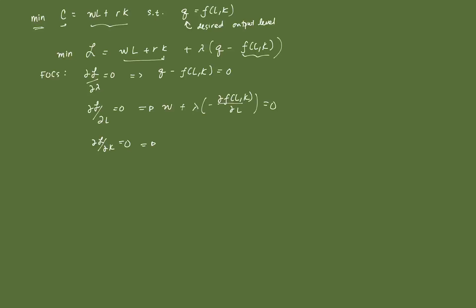Then, we're going to derive the Lagrangian again, but this time with respect to K, that's going to be R plus lambda. Then, we're going to derive this one with respect to K now, that's minus partial F(L,K) partial K equal to 0.